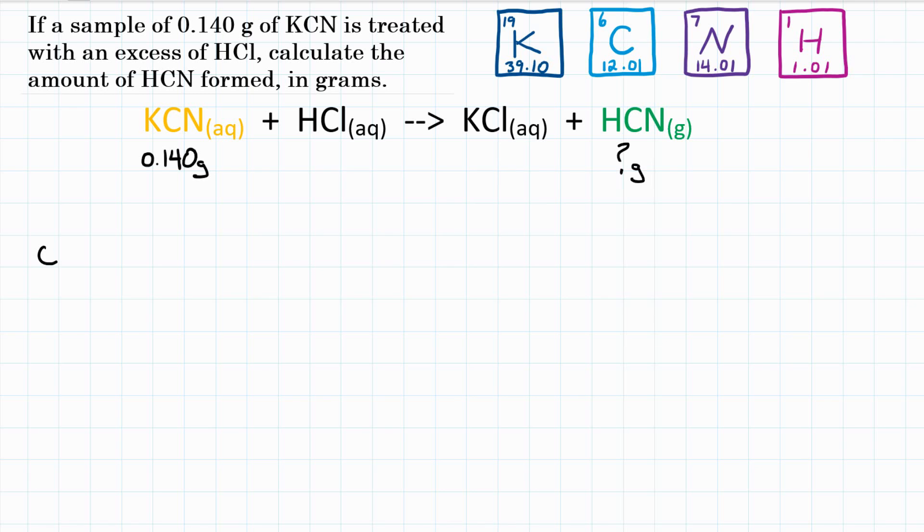The problem says, again, you have 0.140 grams, and that is of KCN. We want, in the end, grams of HCN that will be formed if all of the KCN reacts. This is mass to mass stoichiometry, so that's going to be three conversion factors. One, two, three. Three conversion factors to get all the way from the mass of a reactant to the mass of a product.